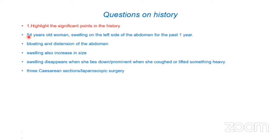Question one: highlight the significant points in the history. These are: 54-year-old woman, swelling left side of the abdomen, bloating and distension. The swelling increases in size, disappears when she lies down — this is very important — and becomes prominent when she coughs or lifts something heavy. She also has three past caesarean sections and two laparoscopic surgeries.